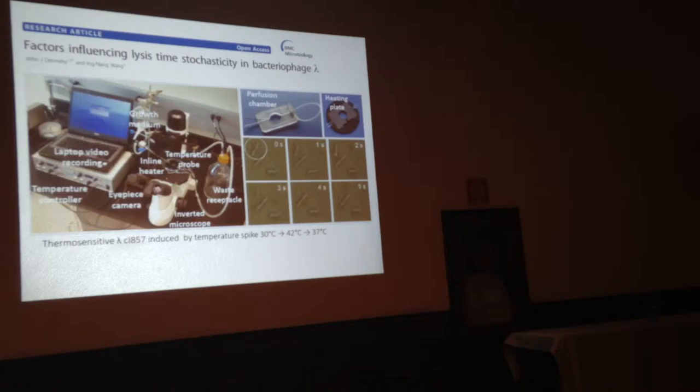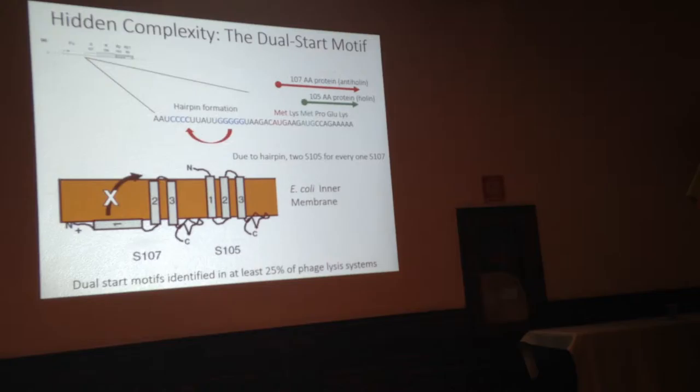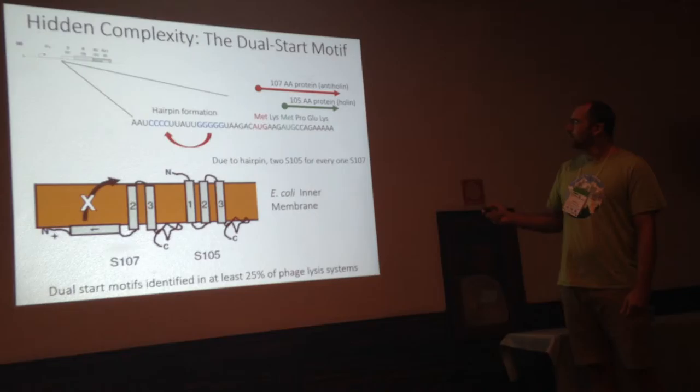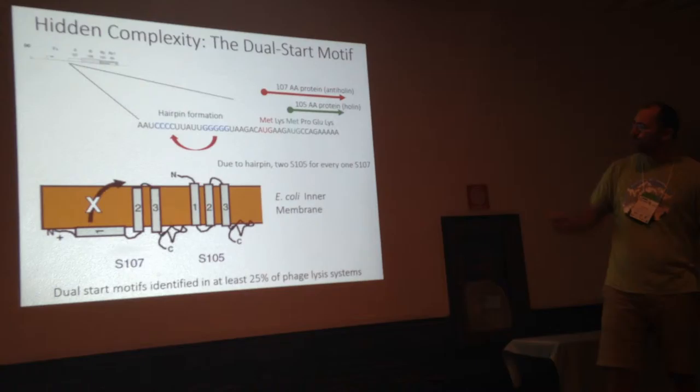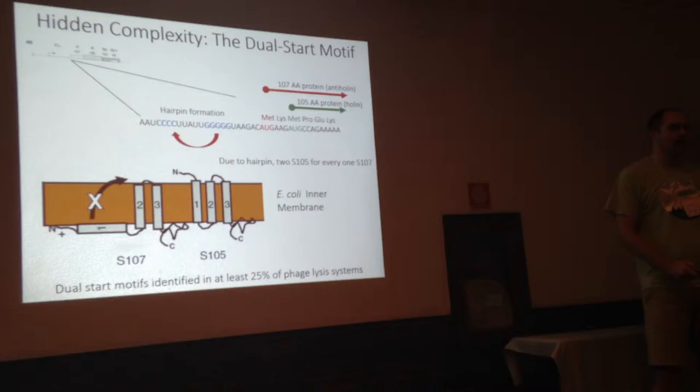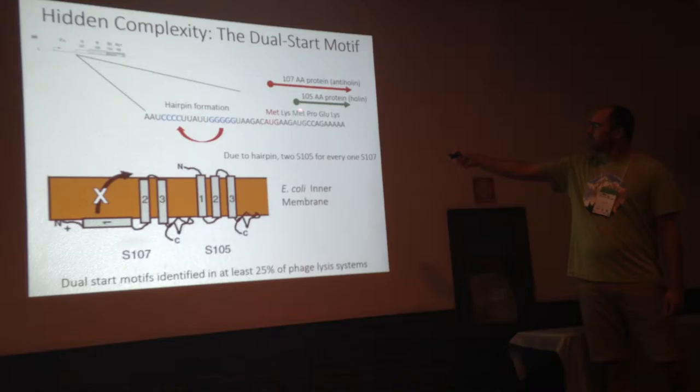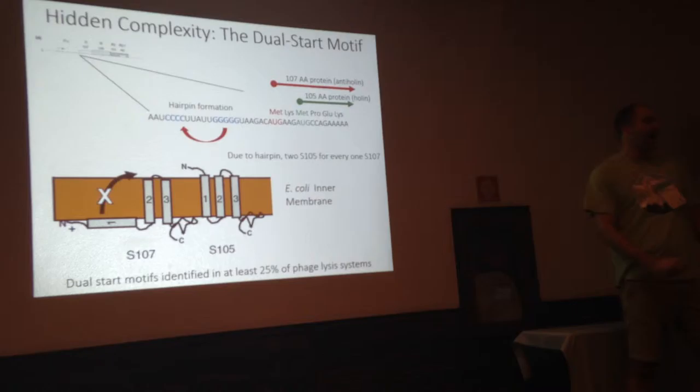Interestingly, when we started studying this system, we realized there was some hidden complexity. It wasn't as simple as we read. The hidden complexity lies in the holin protein. In fact, there are two proteins that are translated from the same open reading frame — they have two start codons. If the ribosome binds to the first start codon, it will make the 105 amino acid protein, which we call holin.